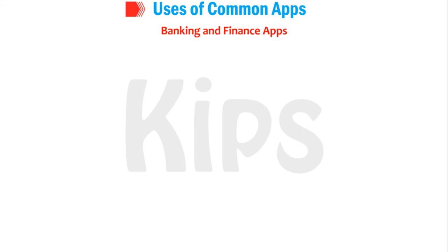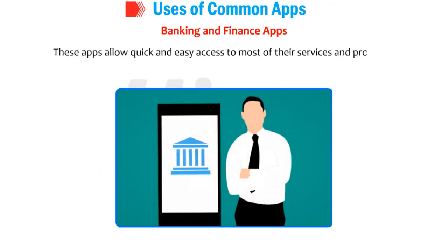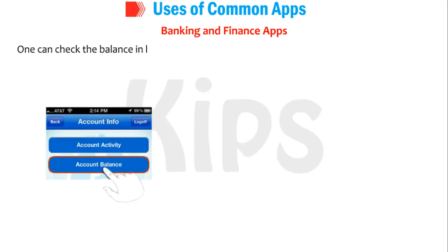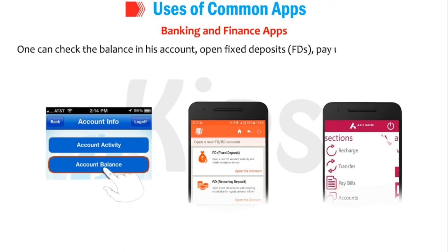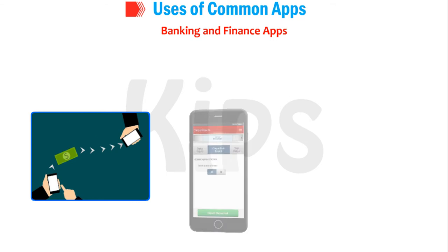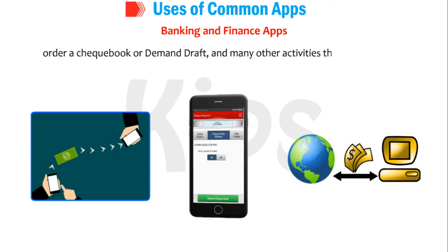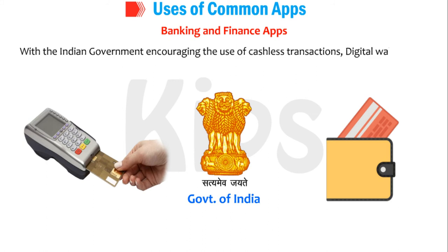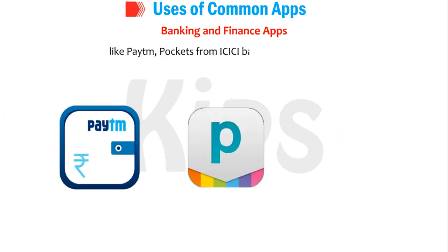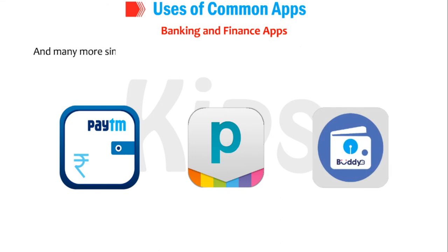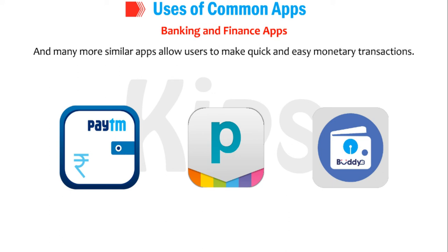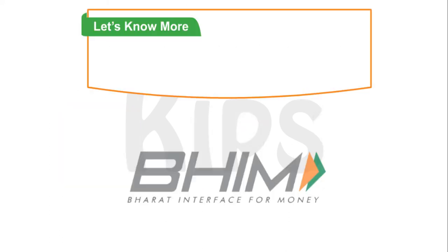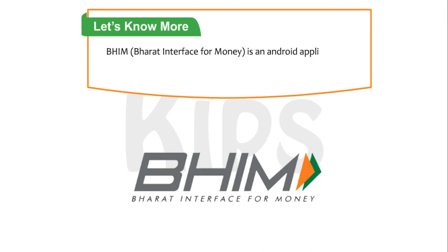Almost all banks have their own apps today. These apps allow quick and easy access to most of their services — one can check their account balance, open fixed deposits, pay utility bills, transfer money, order a checkbook or demand draft, and many other activities. With the Indian government encouraging cashless transactions, digital wallet apps like Paytm, Pockets from ICICI Bank, and Buddy from SBI allow users to make quick and easy monetary transactions. BHIM (Bharat Interface for Money) is an Android application that enables fast, secure, and reliable cashless payments through your mobile phone, directly linked to the user's bank account.